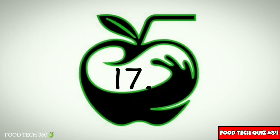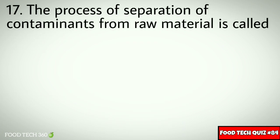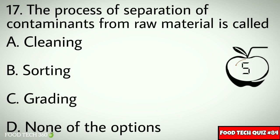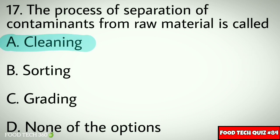Question number 17: The process of separation of contaminants from raw materials is called — Options: A. Cleaning, B. Sorting, C. Grading, D. None of the options. Correct answer: A. Cleaning.